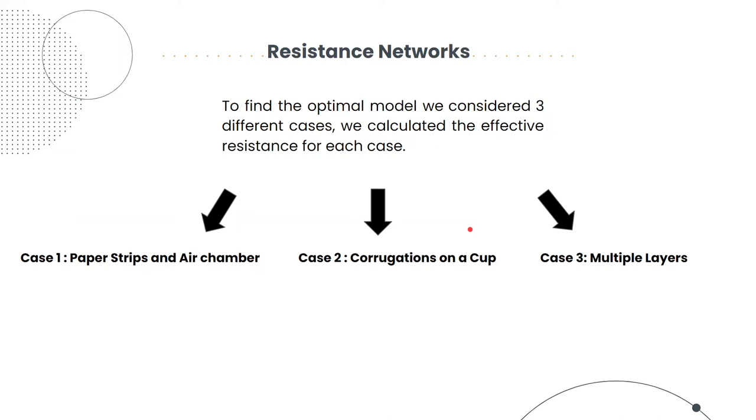In order to maximize time for a fixed thickness of cup, we will try to minimize the value of thermal diffusivity alpha, that is K by rho Cp, where K is thermal conductivity which we know is inversely proportional to resistance. So now we are going to look at a few possible cup designs and see which one of them does the job better.